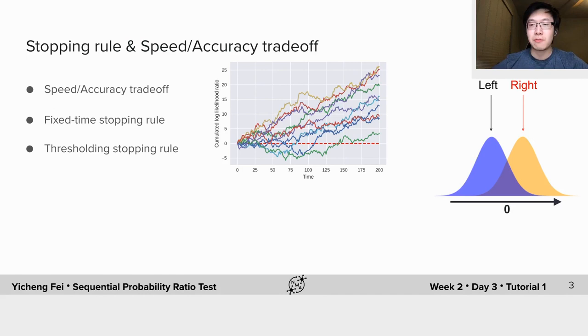Now let's take a look at some sequences of data randomly generated from the orange Gaussian distribution shown on the right here. Our goal is to estimate from data which one, left or right, is the true data generating distribution.